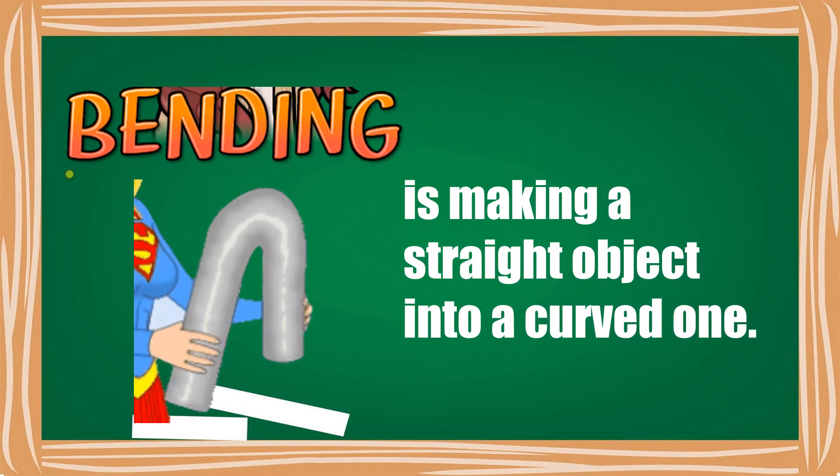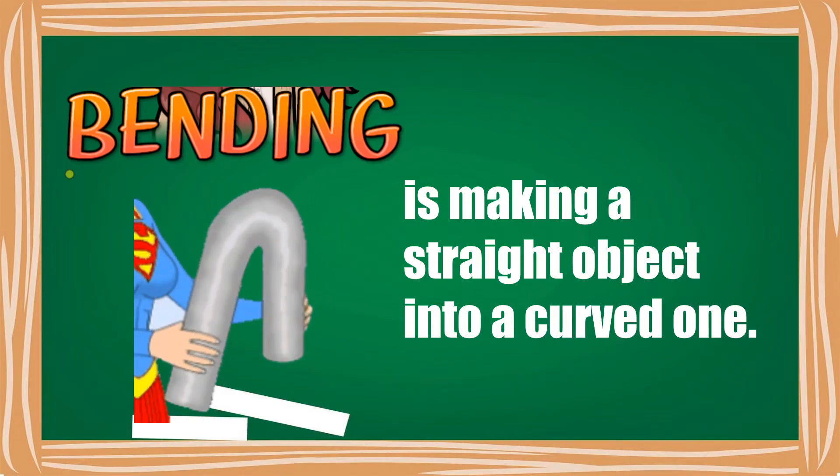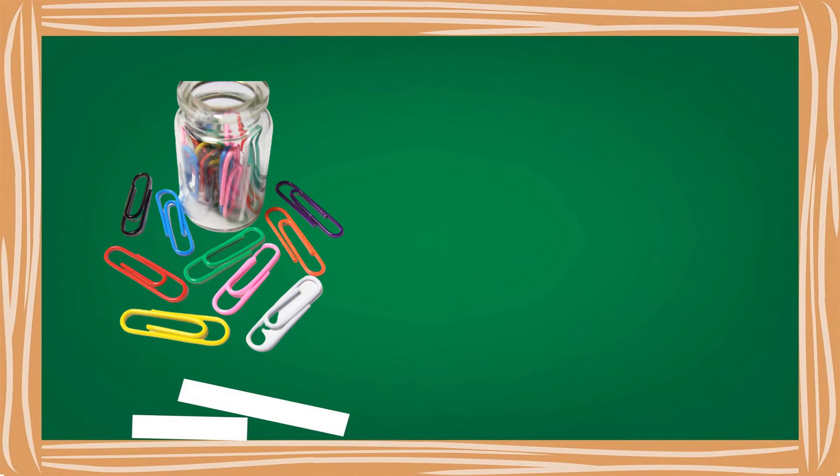Bending is making a straight object into a curved one. Another example is paper clip. We can change the size and shape of the paper clip by means of bending.